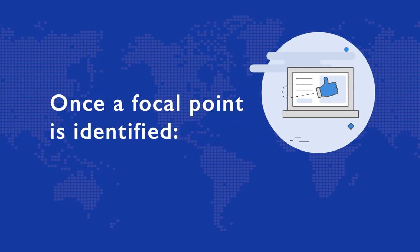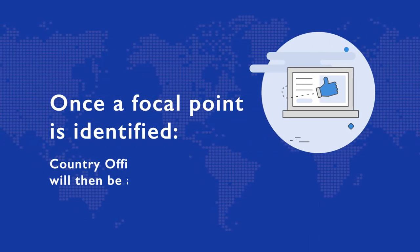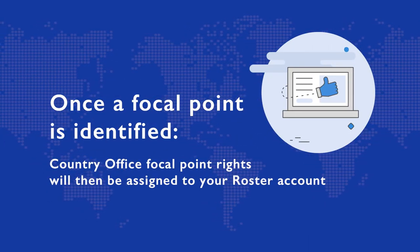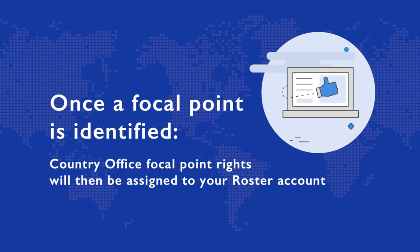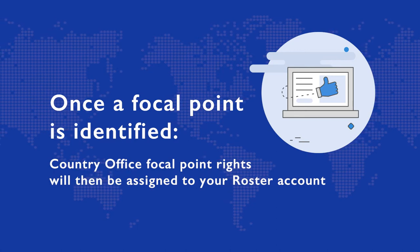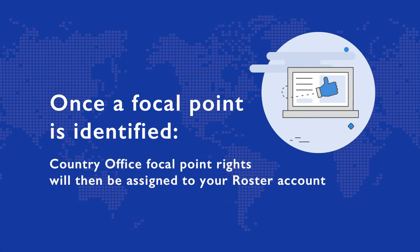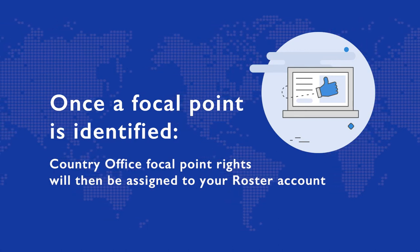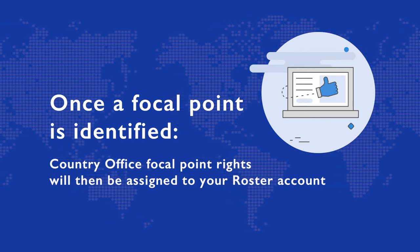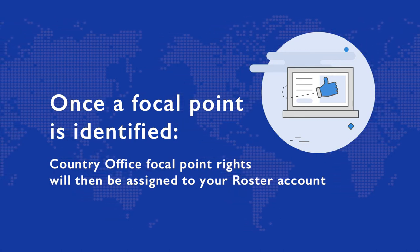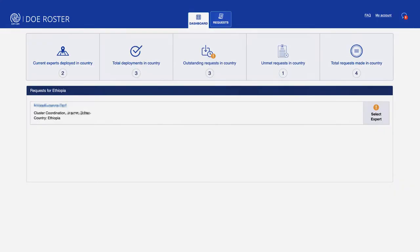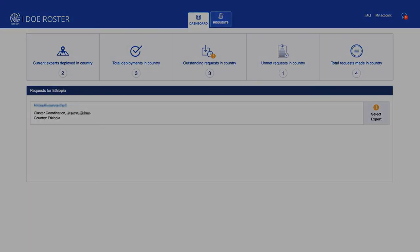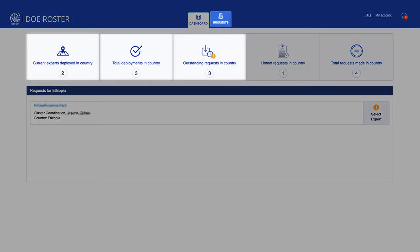The DOE roster admin team must now assign country office focal point rights to your account. Once the country office rights have been assigned to you, a request tab will appear in your account.